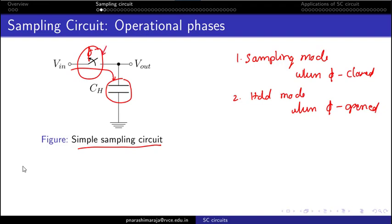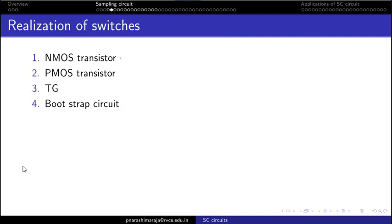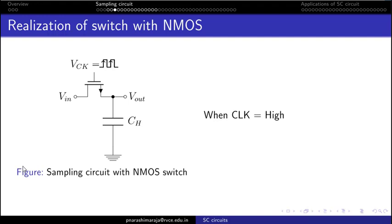We use four different types of devices to realize this switch: the NMOS transistor, the PMOS transistor, the transmission gate, and the bootstrap circuit. We will realize the switch with each of these and examine the drawbacks of each. As shown, I have replaced the switch with an NMOS transistor.